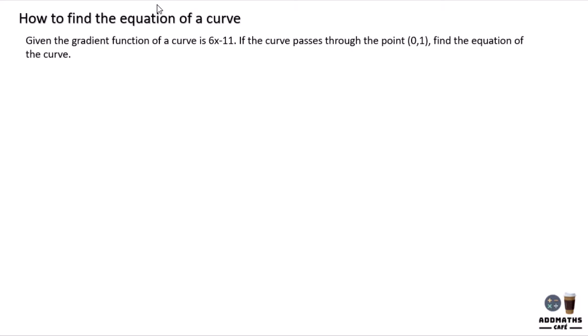How to find the equation of a curve? Given that the gradient function - gradient function means dy/dx - of a curve is 6x minus 11. If the curve passes through the point (0,1), find the equation.